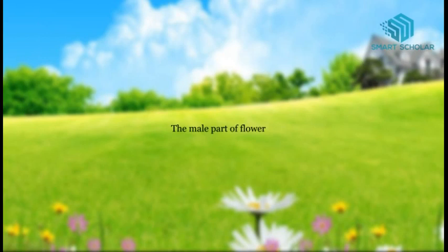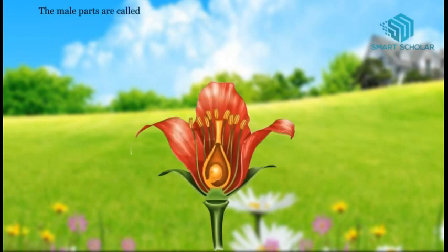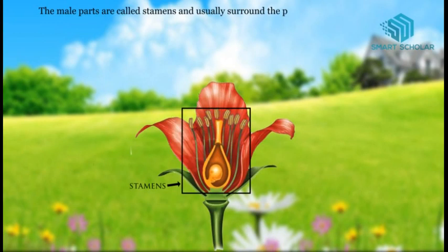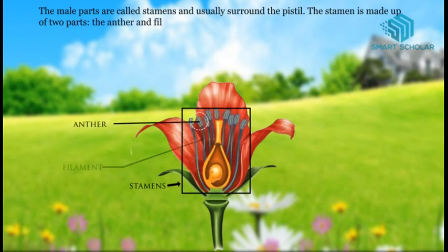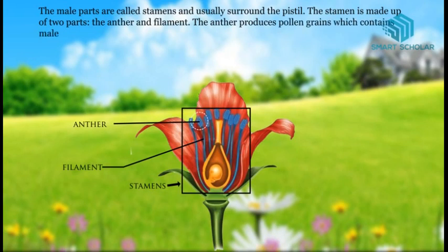The male parts are called stamen and usually surround the pistil. The stamen is made up of two parts: the anther and filament. The anther produces pollen grains, which contain male reproductive cells. The filament holds the anther up.